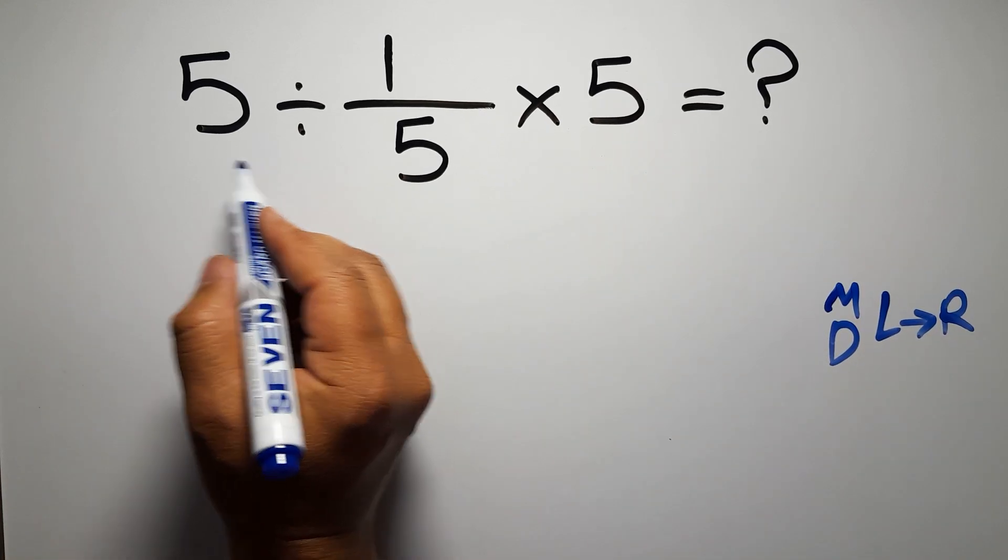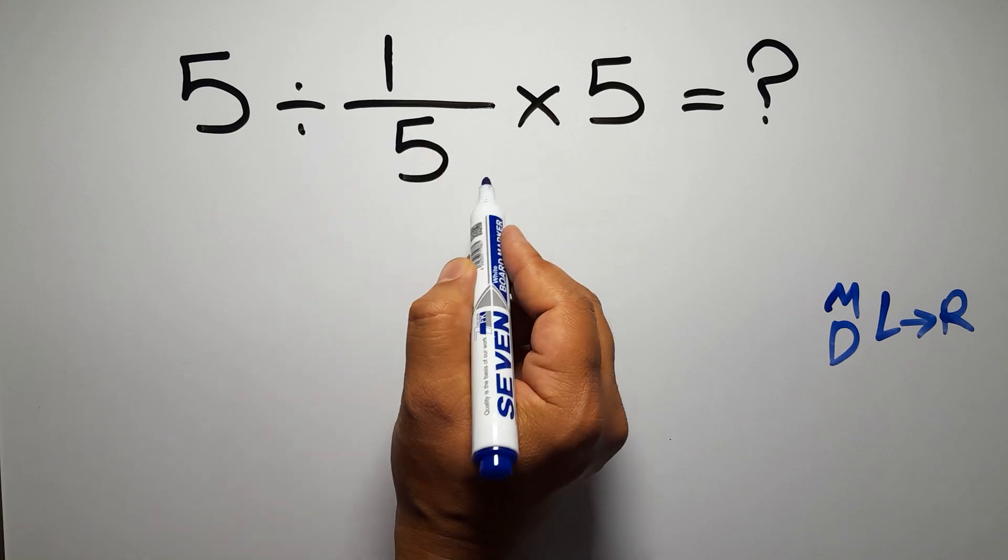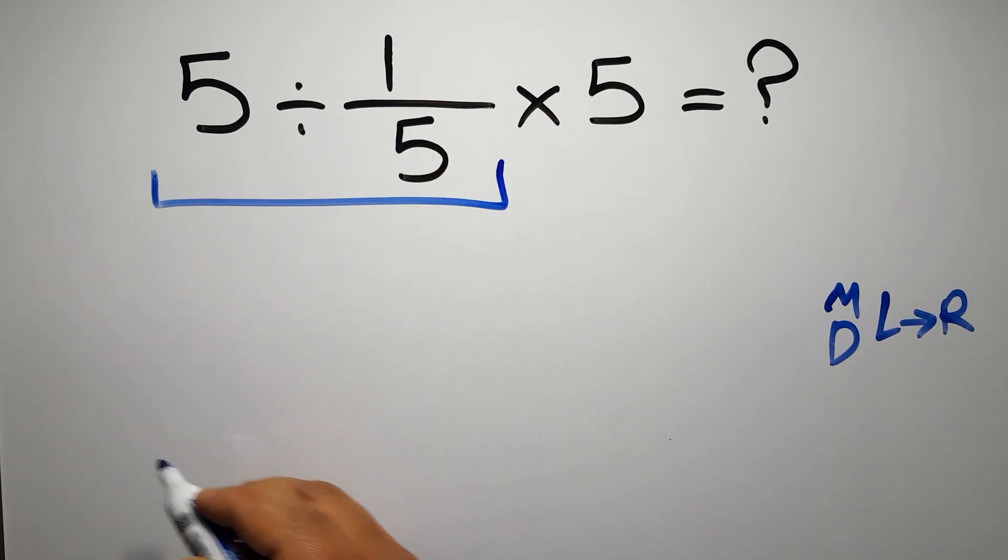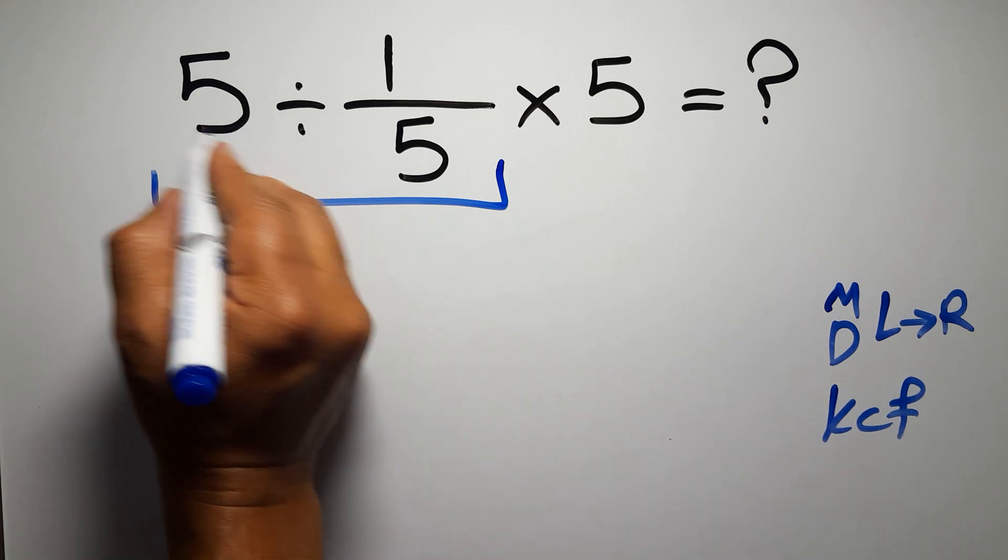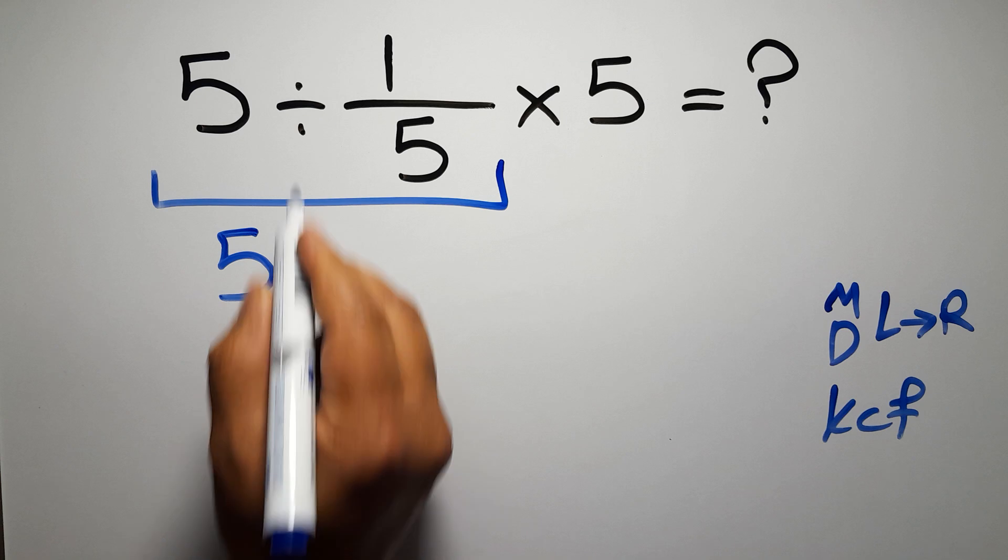So first, this division: 5 divided by 1 over 5. According to the KCF rule—K stands for keep, C stands for change, and F stands for flip—we can write: keep the first fraction, change the division to multiplication, and flip the second fraction.